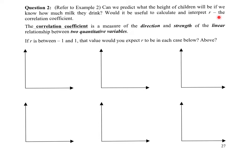R is a correlation coefficient that measures the direction and strength of a linear relationship between two quantitative variables. If the relationship is non-linear, or there is no relationship, or if there are not two quantitative variables but a mix of quantitative and qualitative variables, then we cannot use the correlation coefficient.